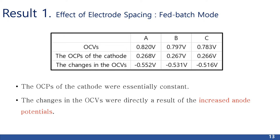This table shows a decrease in the OCPs of the anode. The open circuit voltages measured for these three cases were 0.820 V, 0.797 V, and 0.783 V. The OCPs of the cathode were essentially constant. Thus, the changes in the OCVs were directly a result of the increased anode potentials, which were –0.552 V, –0.531 V, and –0.516 V.